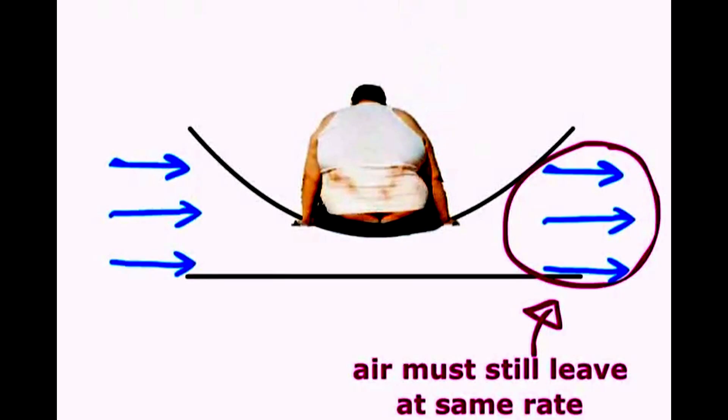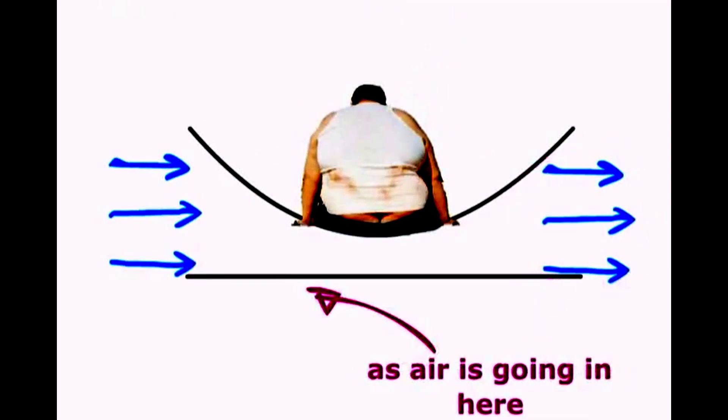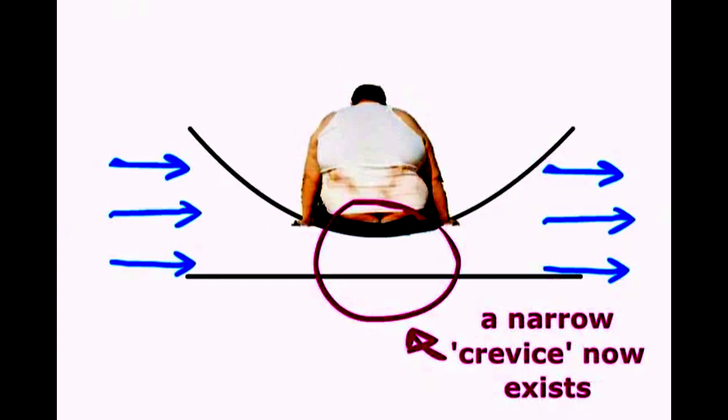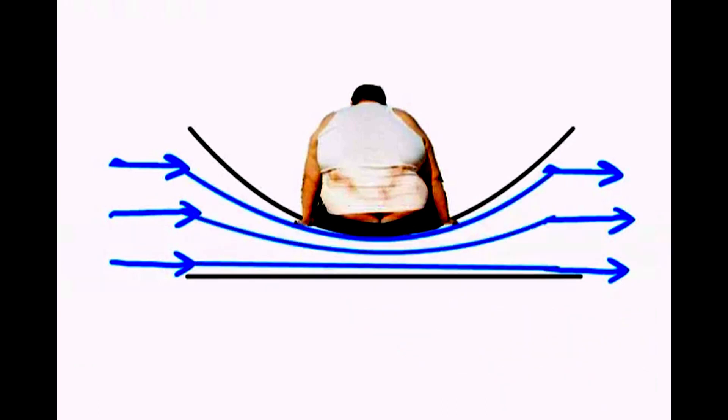As you can see, the air here now needs to converge, and because there is less space, it must speed up going into this gastric band to ensure the same amount of air is going through the tunnel. Once through, it can slow down again, until finally the speed of the air at the end of the tunnel matches the speed of the air at the entrance.